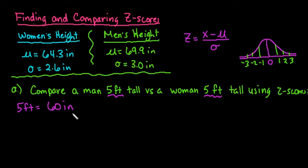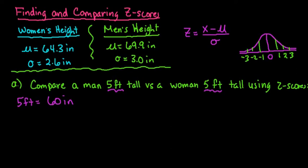So we're going to compare a male's height of 60 inches with a female's height of 60 inches and see which one is more extreme. You can tell that this one is further away from the 69.9, but with the different variations, remember that does play a role in your z-score.